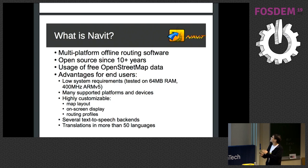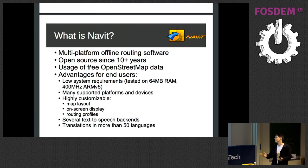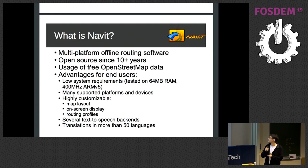We are already pretty long in the market. Our first commit was more than 10 years ago. We use mostly OpenStreetMap data, though we could also use some other map sources. From the user perspective, the advantages are we keep privacy because it's offline navigation, we support many platforms, and we don't have very high system requirements.